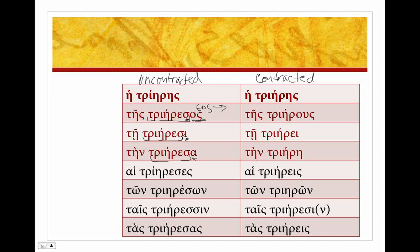For the dative trieresi, this sigma drops out. We get epsilon-iota, giving us triere. For the accusative trieresa, sigma drops out, and epsilon and alpha contract to an eta, giving us triere.